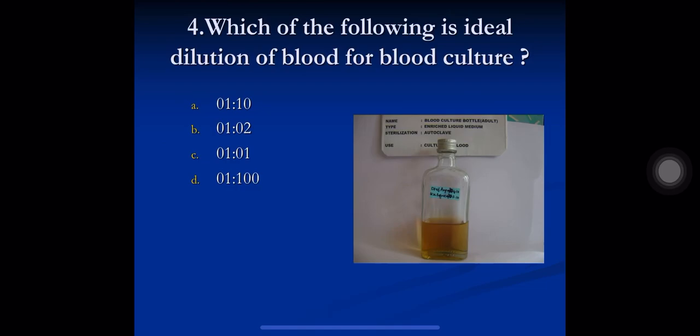Question 4: which of the following is the ideal dilution of blood for blood culture? A) 1:10, B) 1:2, C) 1:1, D) 1:100. For blood culture, media such as thioglycollate broth, heart infusion broth, and brain heart infusion broth are used. The patient's blood is added to the broth in a dilution of 1:5 to 1:10. This dilution helps to dilute the deleterious effect of antibacterial substances in the blood which can inhibit bacterial growth. The correct option is A) 1:10.